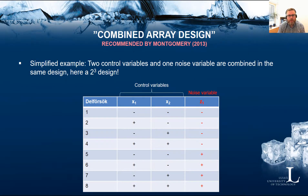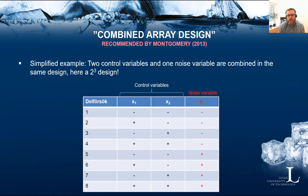The second approach given in the course book is the combined array design, where control variables and noise variables are placed together in the same design. This is recommended because the robust design problem is based on using interactions between control factors and noise factors, so it is more logical that they are tested together. In this simplified example, we have two control factors and one noise variable, all run together in a 2^3 design.